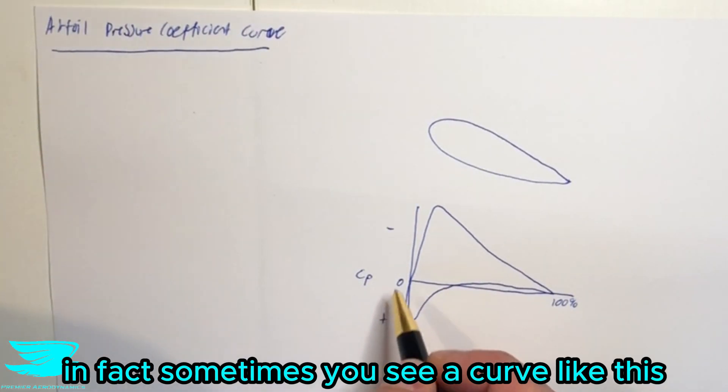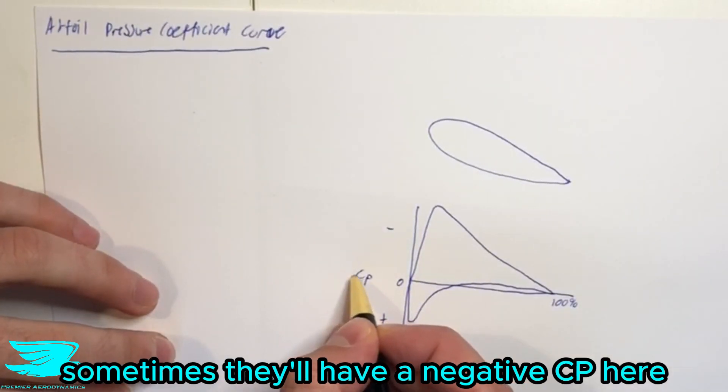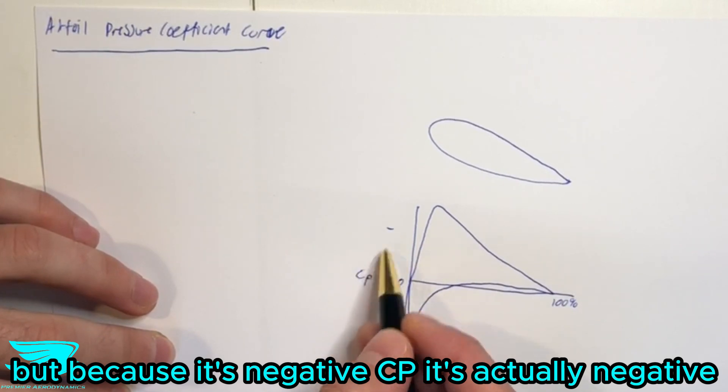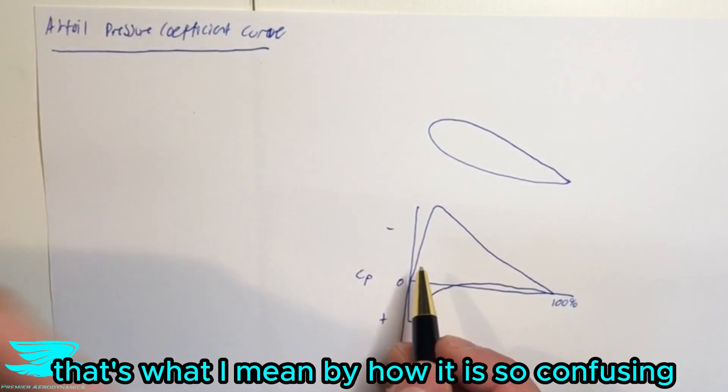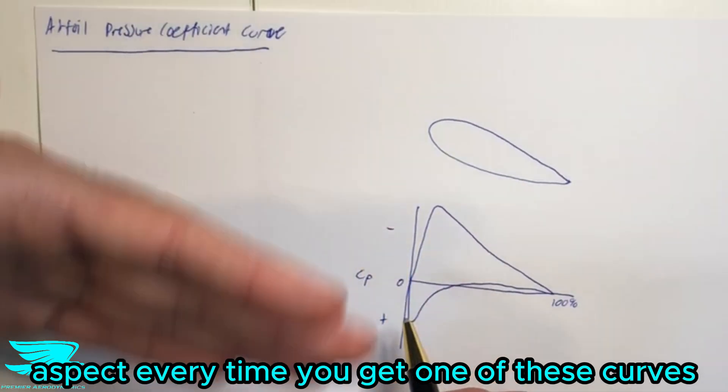And we'll talk about that in a second so you can understand why that is. But the most important thing to remember is this upper part is almost always the negative pressure and the lower part here is almost the positive pressure. In fact, sometimes you'll see a curve like this where it has negative on top, positive on underneath. Sometimes they'll have a negative CP here, positive on top, negative on underneath. But because it's negative CP, it's actually negative. So that's what I mean by how it is so confusing.